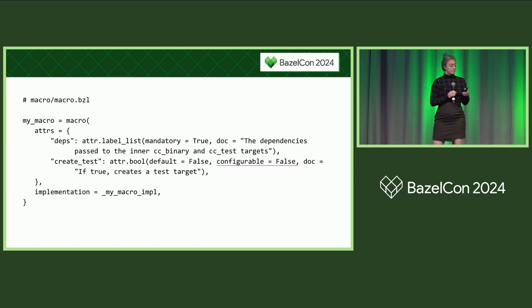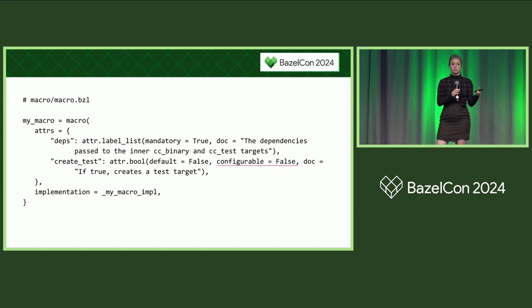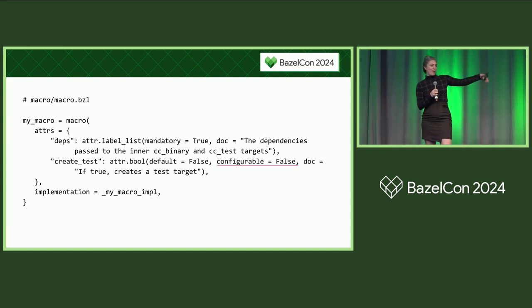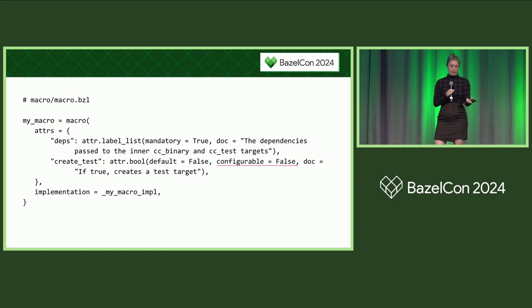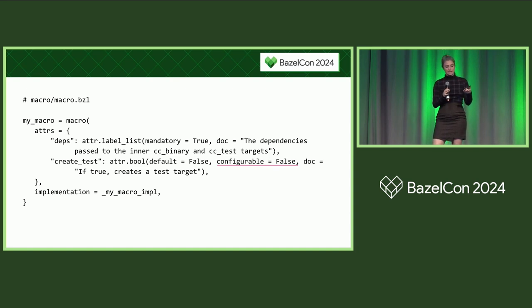One thing particular about symbolic macro attributes is they take a configurable parameter, which determines whether the attribute accepts selects. If it's true — which is the default — if you pass something to this attribute, it'll be promoted to a select. The idea is that you as a macro author are forced to handle selects correctly from the beginning, instead of being surprised by a caller 100 miles away having an issue much later. Or you can decide you don't take selects by passing configurable equals false. Note that because all attributes need to be declared, the pattern of passing **kwargs to your macro doesn't work as it used to.